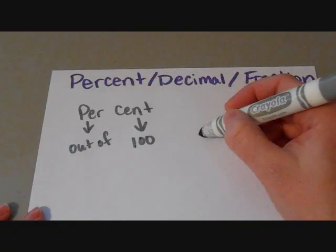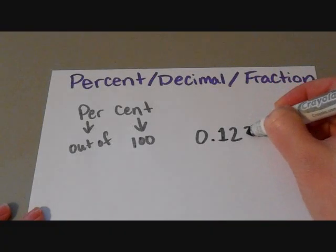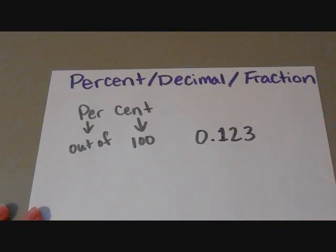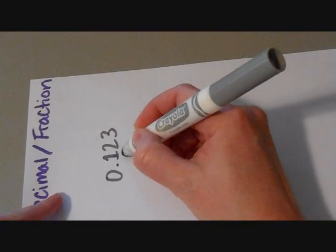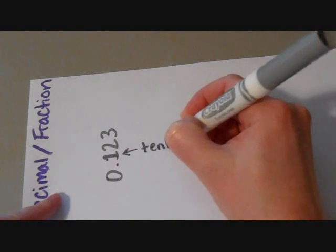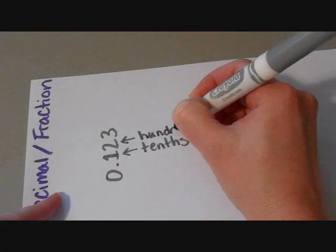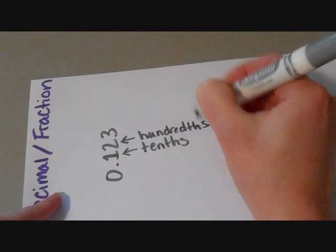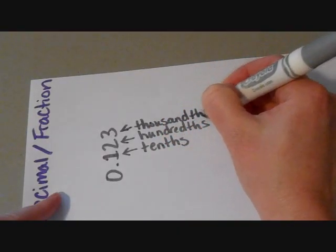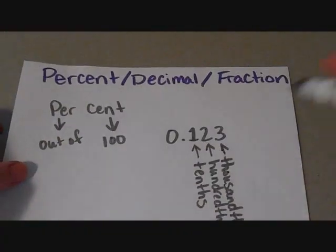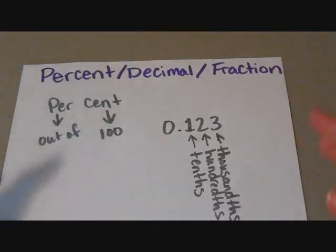Decimals are labeled with their place values, which makes our life a little bit easier when we're trying to turn them into fractions and percents. This first place value is the tenths, this second place value is the hundredths, and then this one is the thousandths, and then so on and so forth. It continues on with ten thousands and hundred thousands, just in the same way it mirrors the other side of the decimal point.